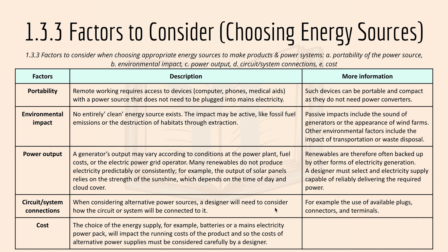Circuit and system connection: when considering an alternative power source, a designer needs to consider how the circuit or system will be connected to it — for example, the use of available plugs, connectors, and terminals. Cost: the choice of energy supply, such as batteries or mains electricity power packs, will impact the running cost of the product. The cost of power supplies must be considered carefully by designers, as some power packs may be very expensive, increasing the cost of the product. This affects profit margins and customer satisfaction, so cost must always be taken into consideration.